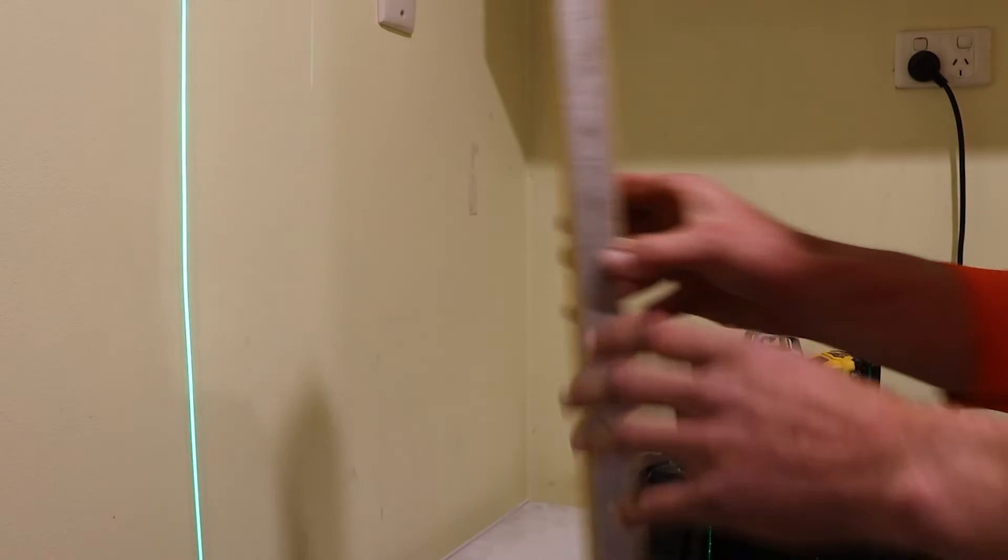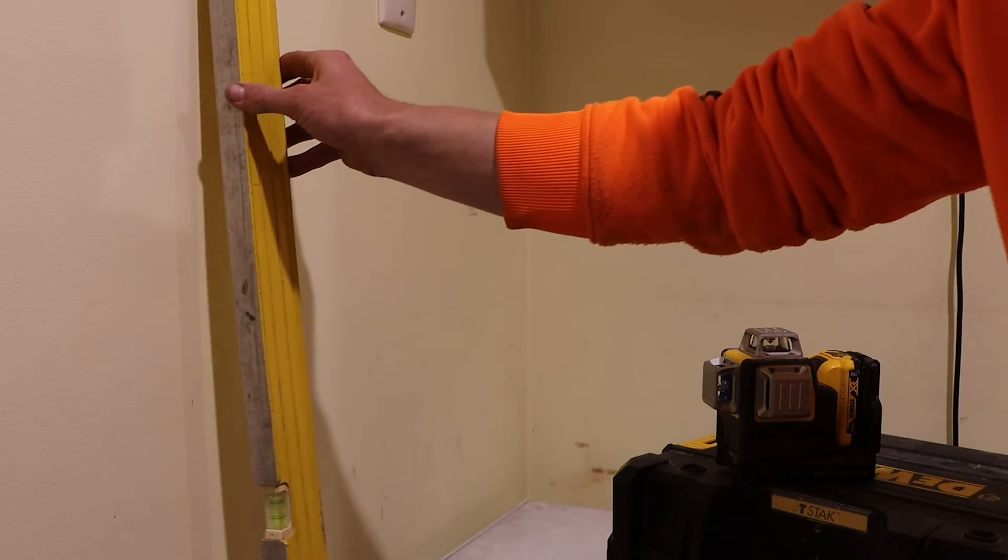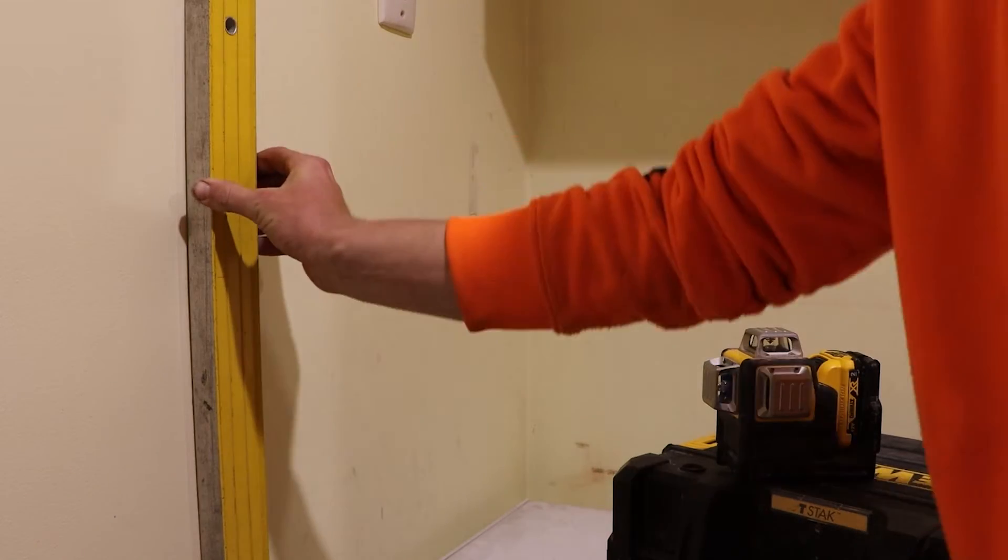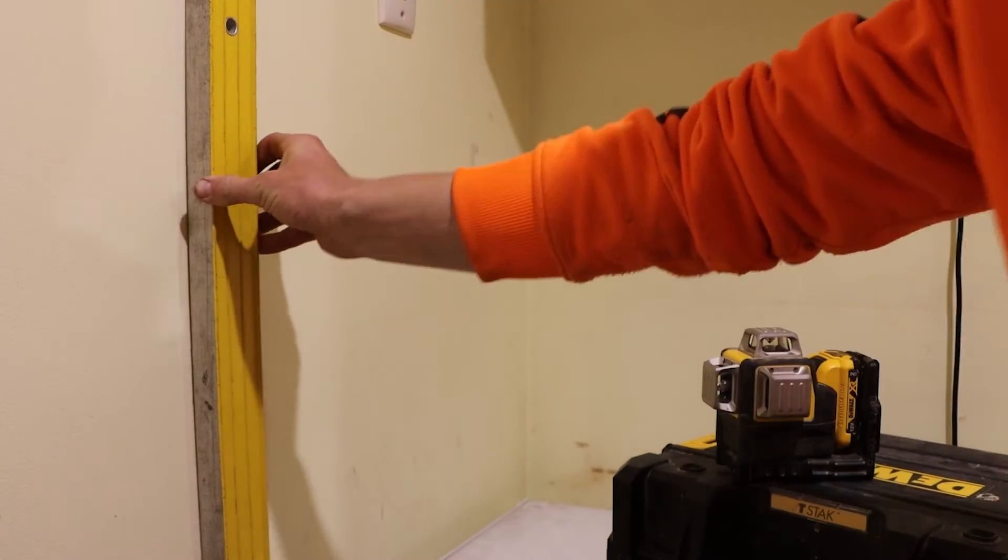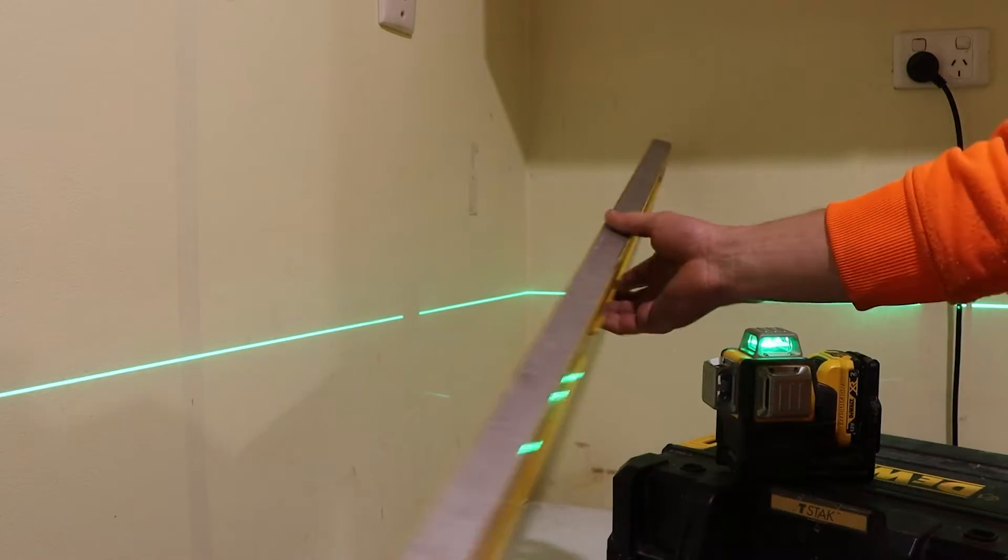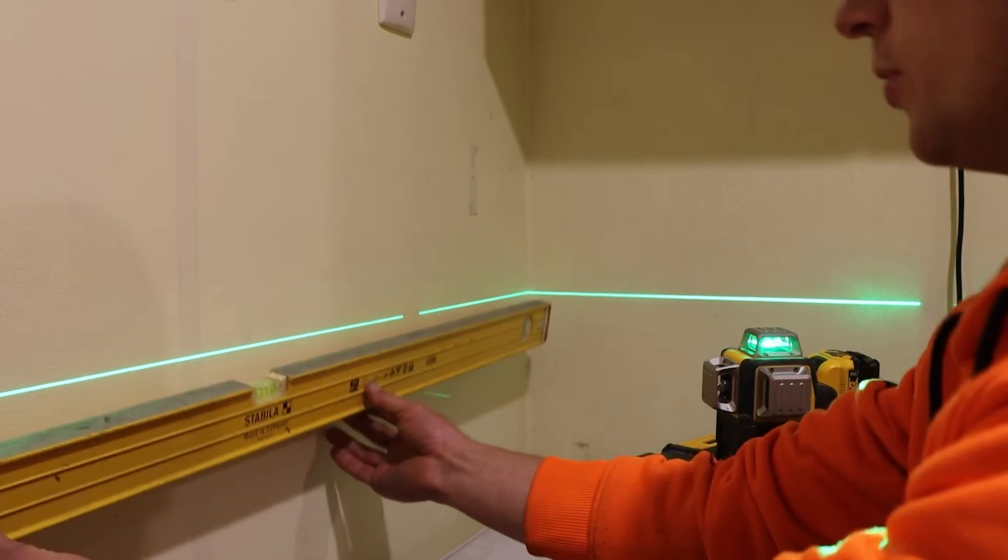Now that I have those two marks, I can even turn the laser off and place my level between those two marks. I can see on my spirit level that that is level, and that's not a problem. This method can also be used for a horizontal laser line.